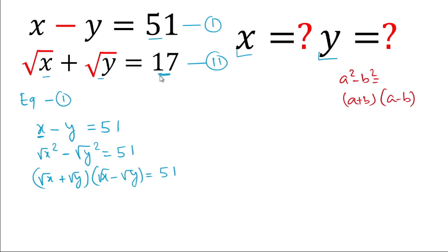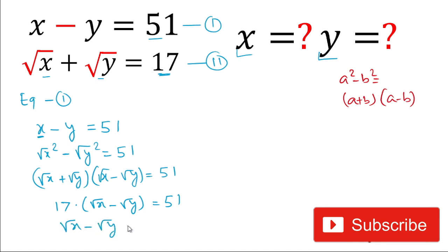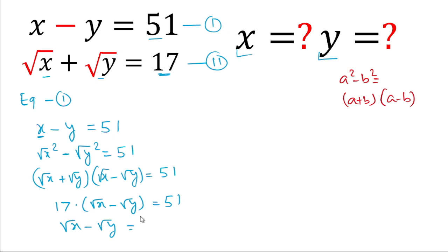From equation 2, we can put the value of under root x plus under root y as 17. So we write: 17 multiplied by under root x minus under root y equals 51. Dividing both sides by 17, we get under root x minus under root y equals 3.